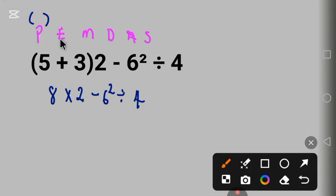The next is exponent, which is something like 2 raised to power 2. When we look at this place we see 6 raised to power 2. We'll solve this one now. 6 raised to power 2 means 6 times 6, and that will give us 36. So 8 times 2 minus 36 divided by 4.